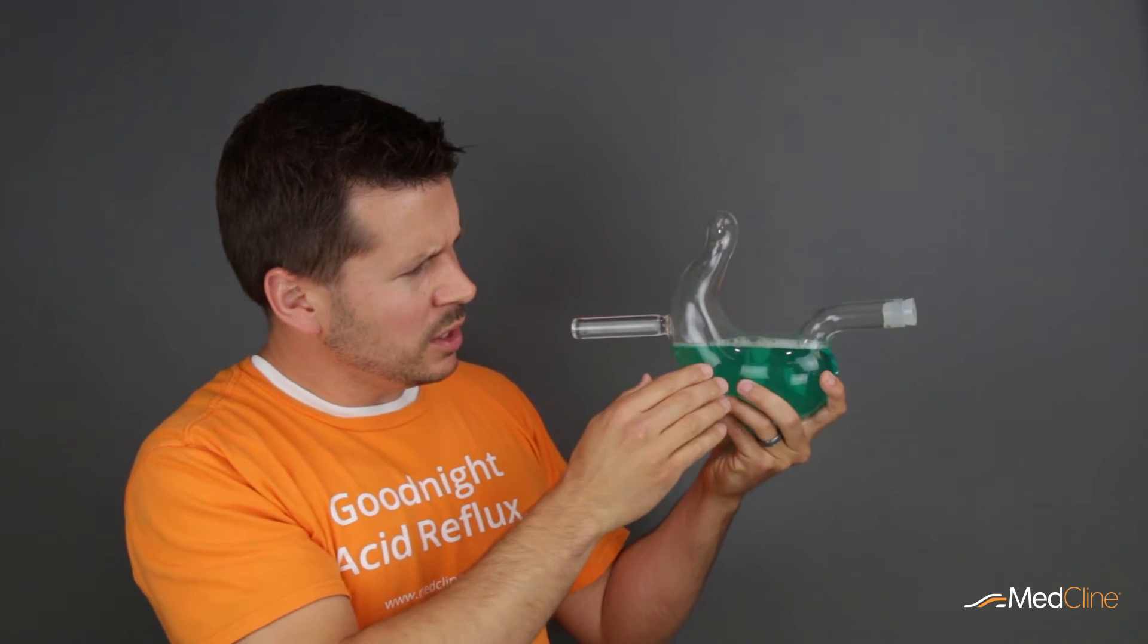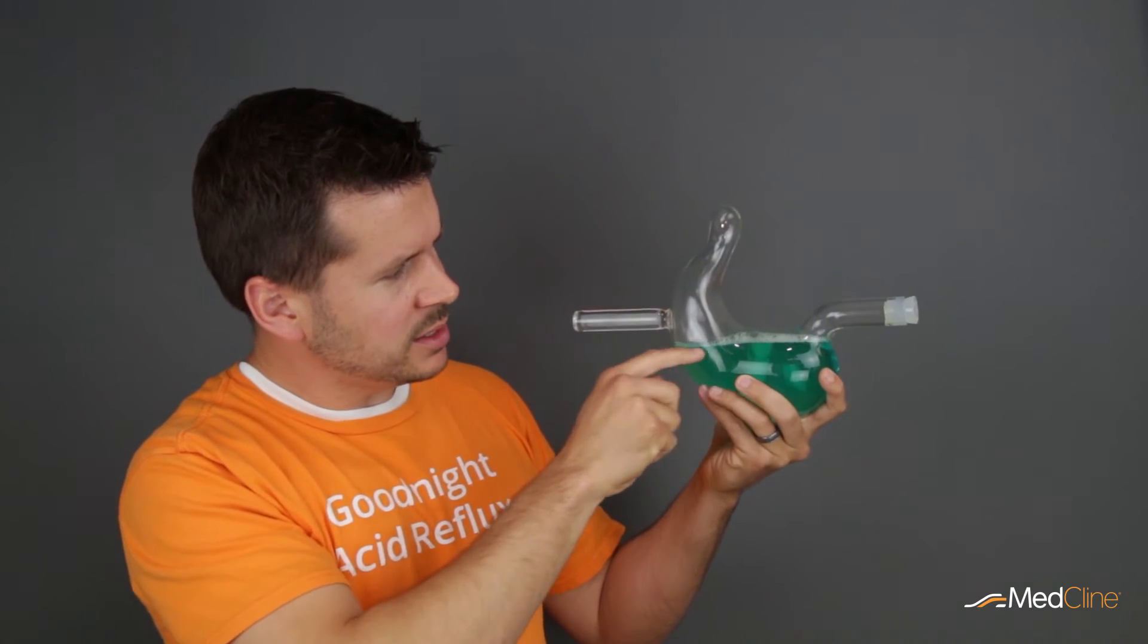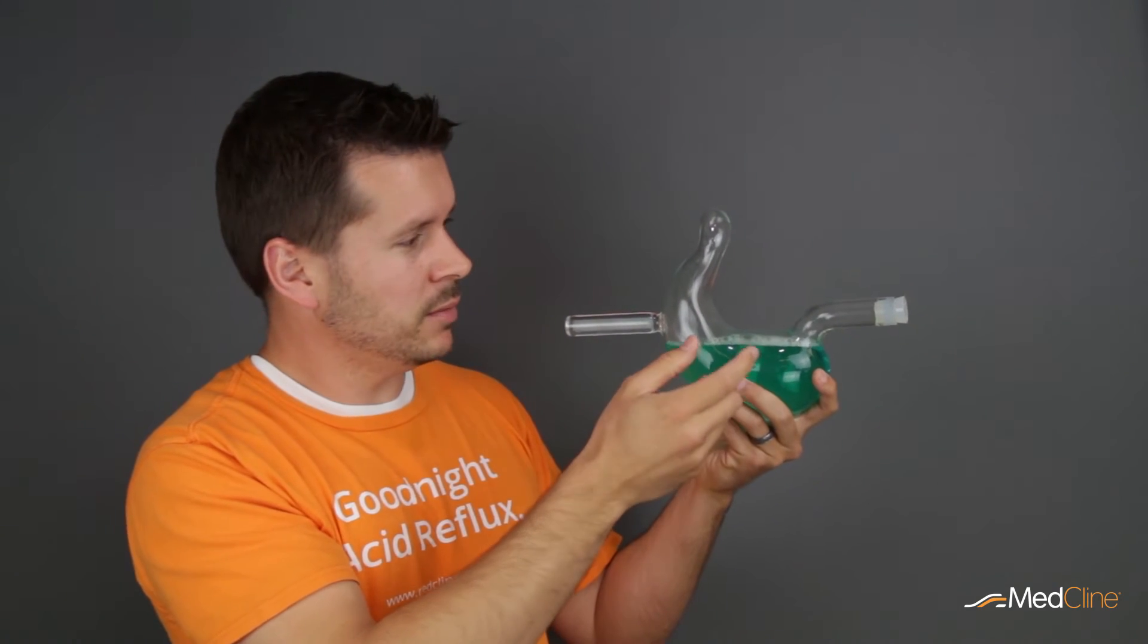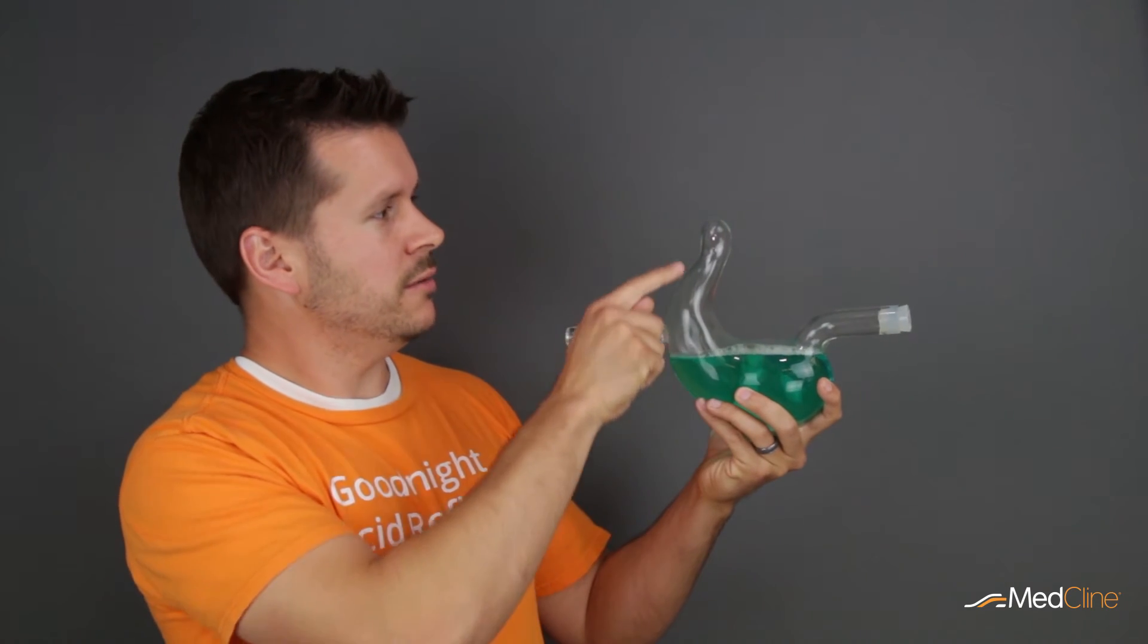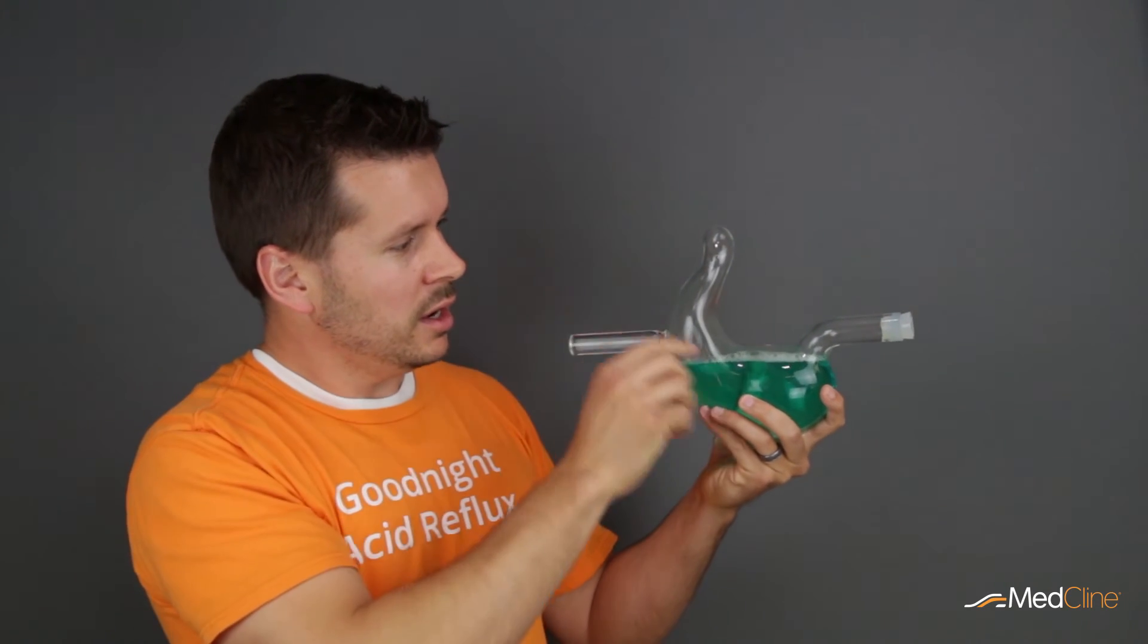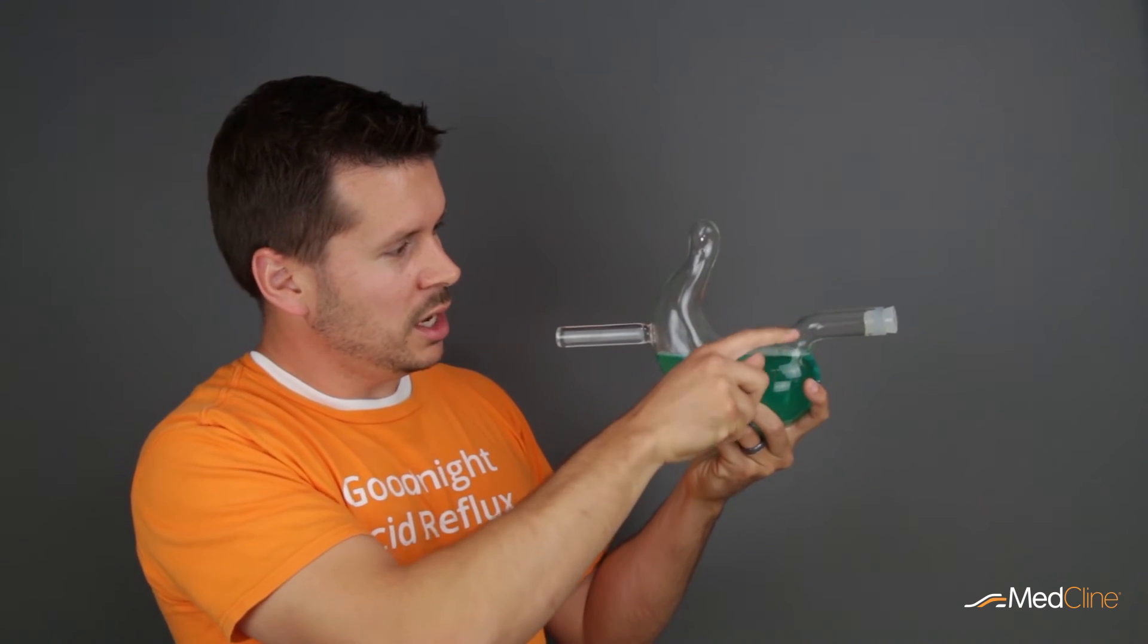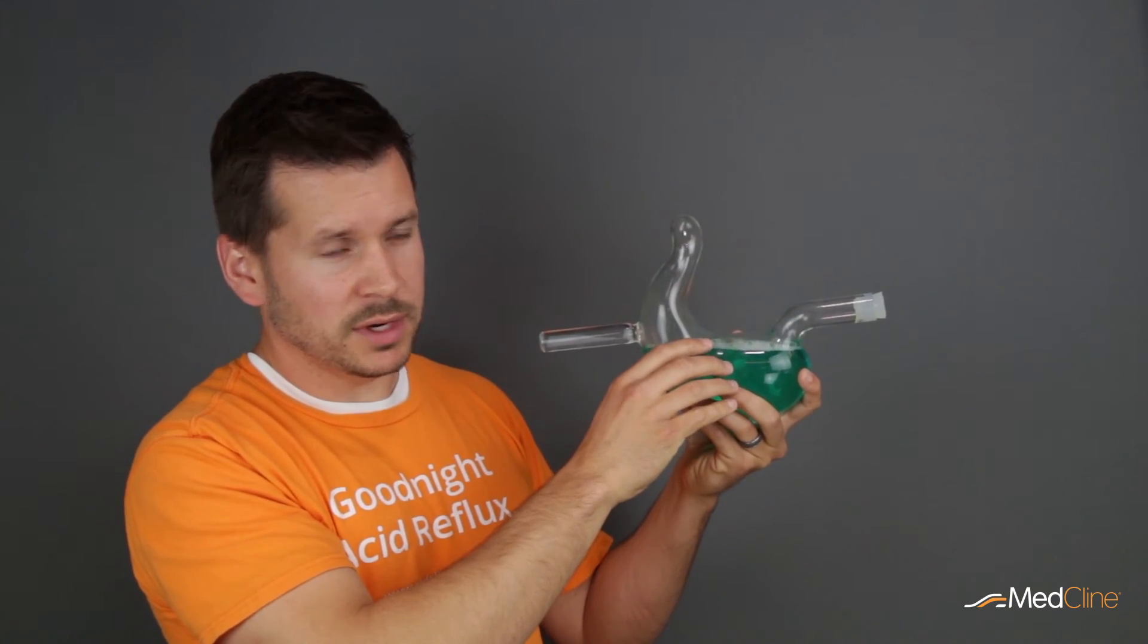So, you might wonder, well, then how could my stomach contents get into my esophagus if they're down here? Because you probably tried to sleep on your left side. Well, when your stomach squeezes to push the food at the pyloric sphincter, as your stomach squeezes, it can actually push the food back the other direction if you have a poorly functioning lower esophageal sphincter.